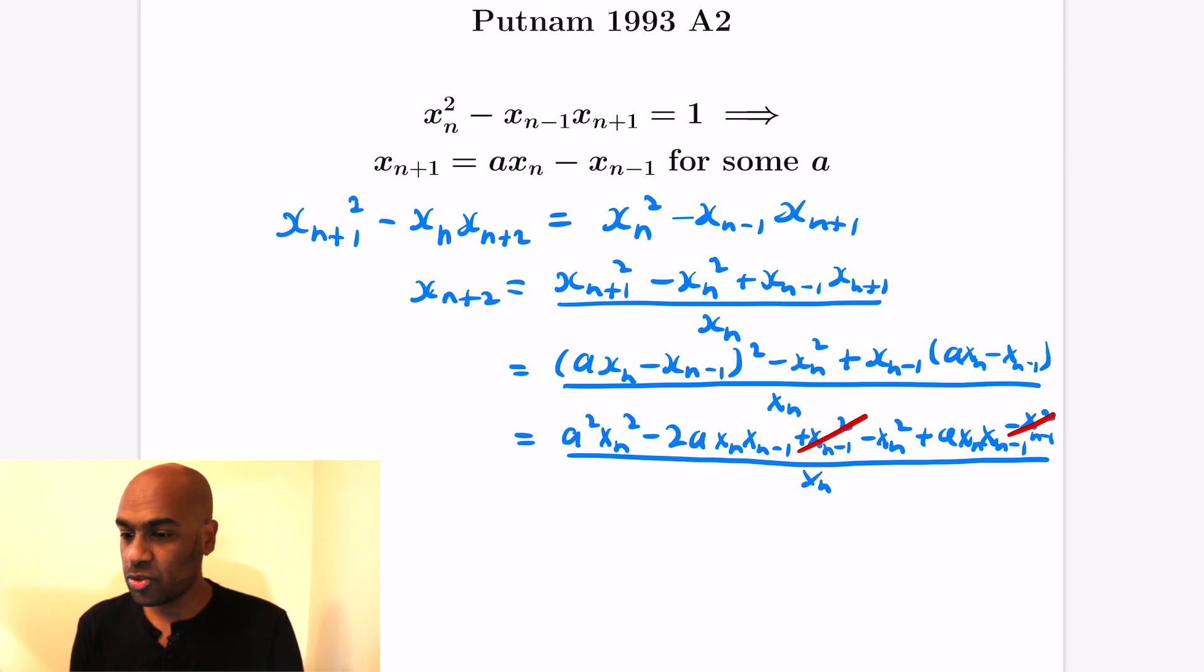We can subtract off these terms here, and then notice what we're left with is some expression involving x_n and x_{n-1}. First we get a squared x_n dividing by that x_n, and then each of these other terms has an x_n factor that leaves us with minus a x_{n-1}, and then finally the minus x_n squared becomes minus x_n.